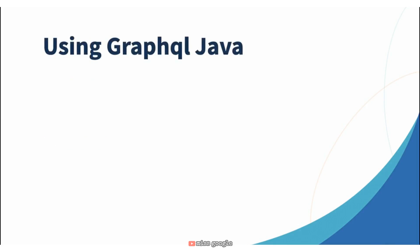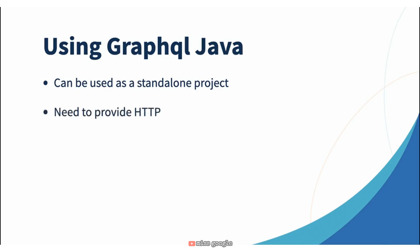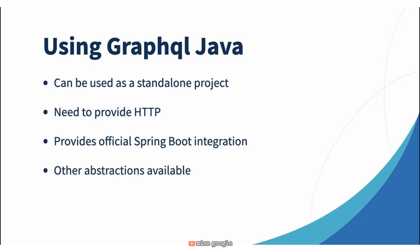Using GraphQL Java does have a little bit of confusion. It is the core library. As such, it can be used as a standalone project, but if you choose to go that route, you will have to provide HTTP services to wrap it. It's a core library, not the exposing of it. However, you can use it with any framework or core libraries exposing HTTP. The team that maintains this worked with Spring itself to create an official, supported version of Spring Boot integration. There are other abstractions available, including from companies like Netflix, but we're going to focus on the one maintained by Spring Source in collaboration with the GraphQL Java team.